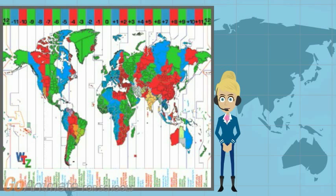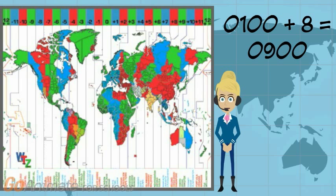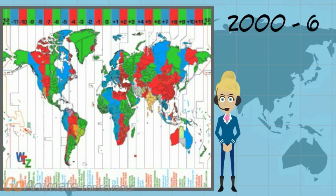Let's try a few examples together. If your local time is 0100 hours and you are in the minus 8 time zone, you add 8 to your local time to get Zulu time. Zulu time in this example is 0900 hours. If your local time is 0100 hours and you are in the plus 6 time zone, you subtract 6 from your local time to get Zulu time. Zulu time in this example is 1400 hours.